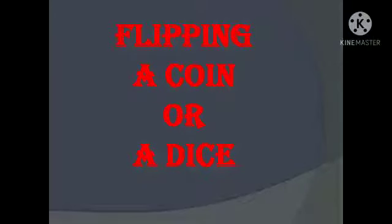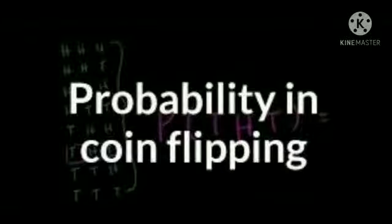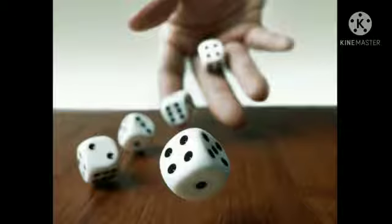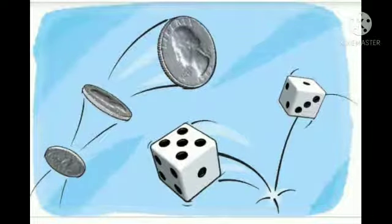Flipping a coin is one of the most important events before the start of a match. There is no certainty whether heads will come or not. Both head and tail have 1 out of 2, that is 50%, chances to occur. Hence, the probability of getting the desired outcome is 0.5. Similarly, while playing with a die, there are 1 out of 6 chances that the required number will come.